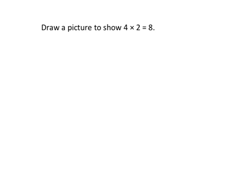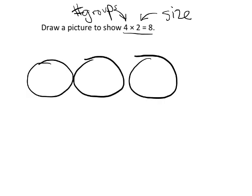In this problem we've got: draw a picture to show four times two equals eight. Four times two — the four is the number of groups and the two is the size of the groups. So we're going to have four groups: 1, 2, 3, 4. And then inside each of those groups are two: one, two — one, two — one, two — one, two. And there is our model to show four times two equals eight.